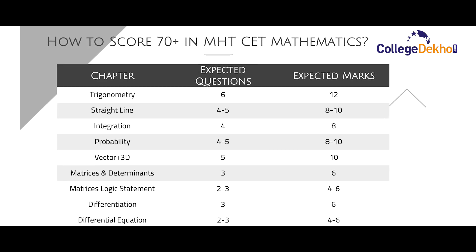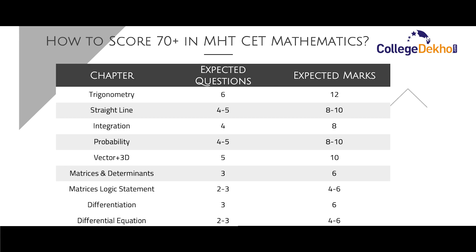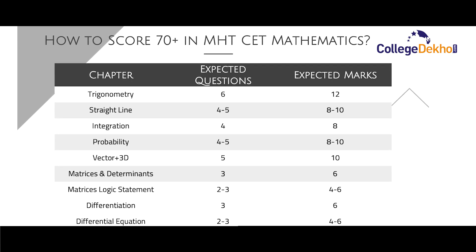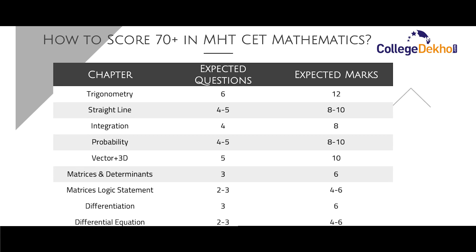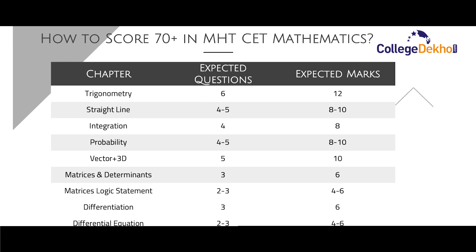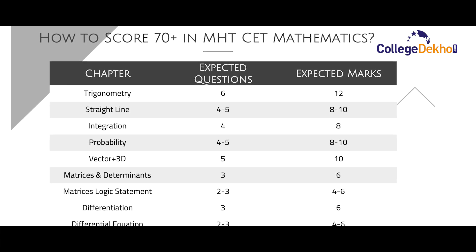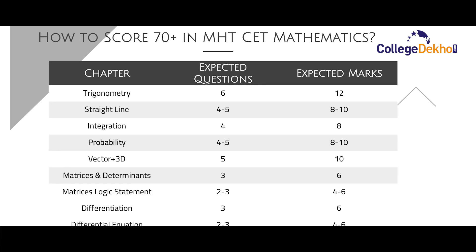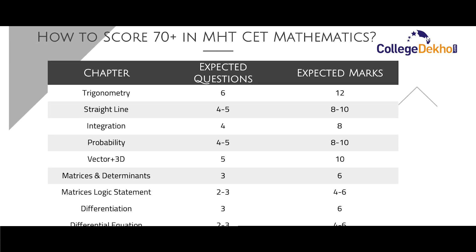For Differentiation, you can expect 3 questions for 6 marks, and for Differential Equations, you can expect 2 to 3 questions for 4 to 6 marks. Hence, the above topics contribute to 70 marks in the Mathematics section of MHT CET. It is important to give top priority to these chapters while preparing, and once you are proficient with them, you can proceed with other chapters to score more than 70 marks.